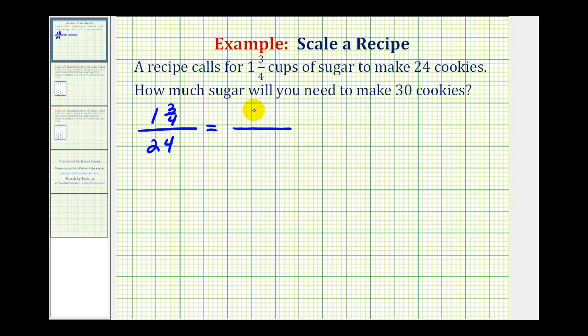We don't know how much sugar is needed so this is the unknown. Let's call this x to thirty cookies. Now that we have a proportion we can cross multiply and solve for x.